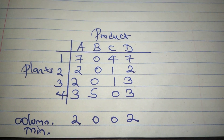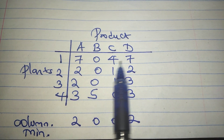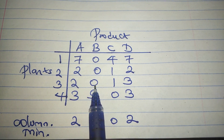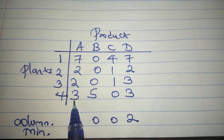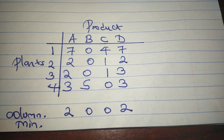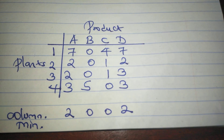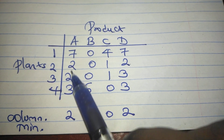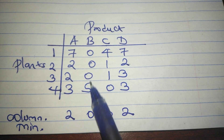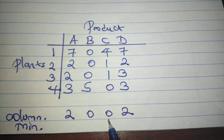That operation gives us a table which looks like this: row one: 7, 0, 4, 7; row two: 2, 0, 1, 2; row three: 2, 0, 1, 3; row four: 3, 5, 0, 3. The next step is to reduce each column by its smallest element. In column one the smallest is two; column two is zero; column three is zero; column four is two.